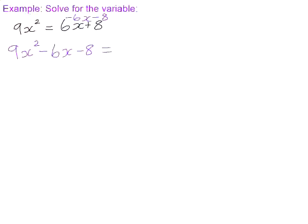Once you've subtracted everything from the right-hand side, you are just left with 0. Now the next step is to factorize that equation, to factorize that expression.